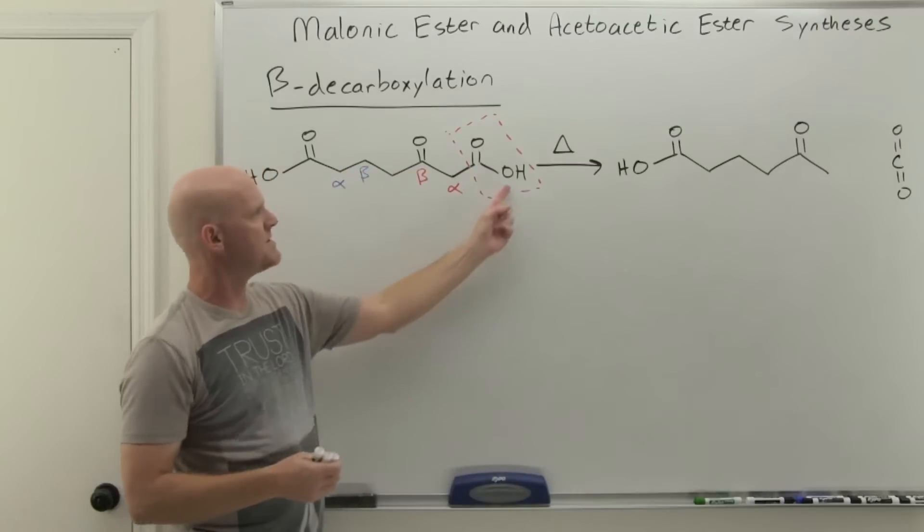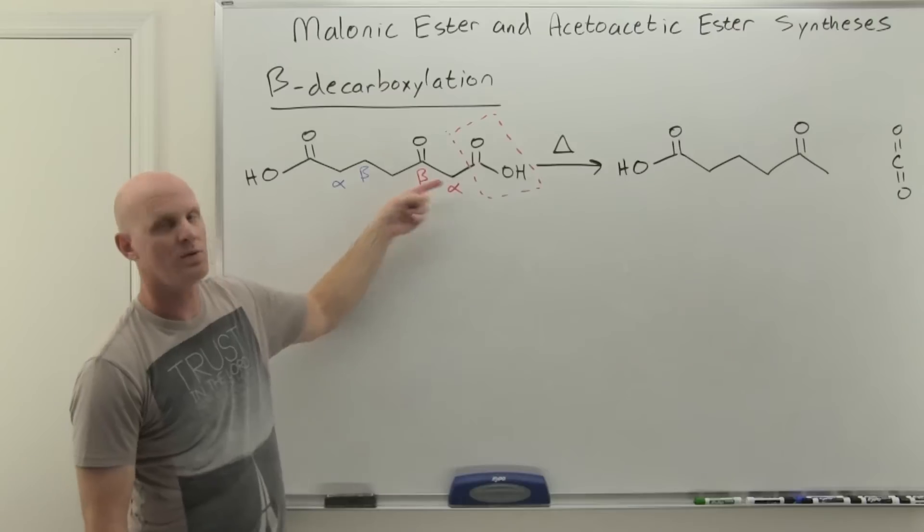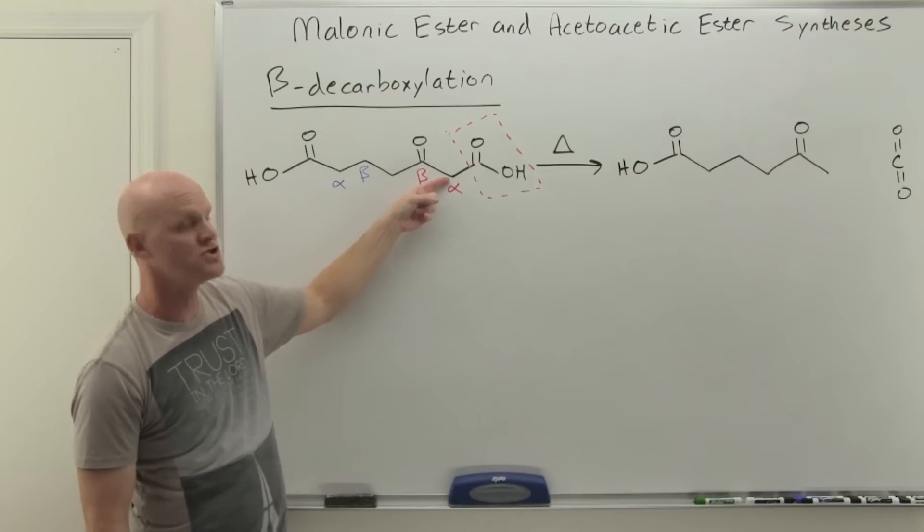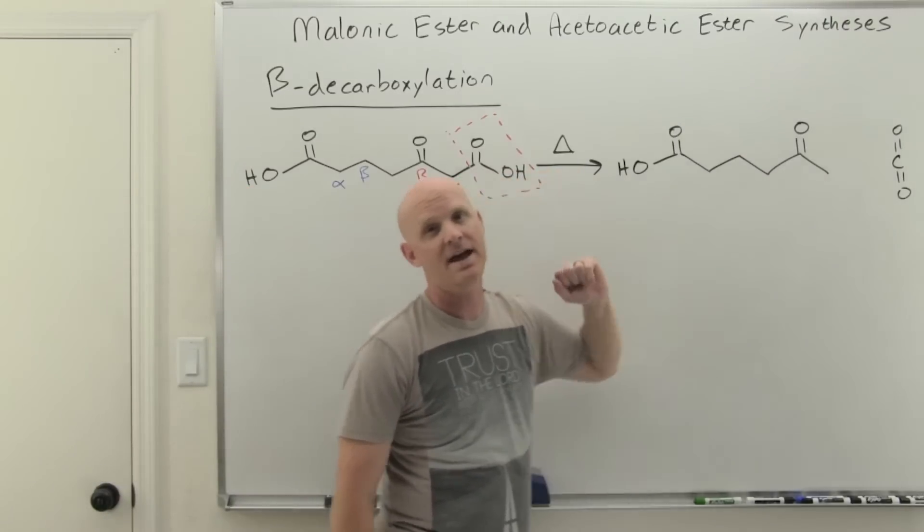You might be like, well, hey Chad, what happened to that H? Glad you asked. So that H right there ends up in one way, shape, or form on that alpha carbon right there. That alpha carbon just has two Hs here, but it's a methyl group in the product. It picks up an H.